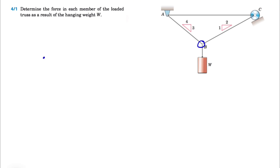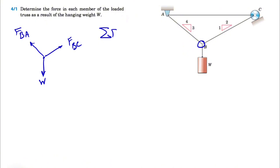If we draw the free body diagram, we have the weight W, the force in member BC shown as FBC, and the force in member BA. Since we are in equilibrium, we can use our equilibrium equations. We're going to start with the sum of all forces in the X direction equal to zero. We have some information regarding the angles.